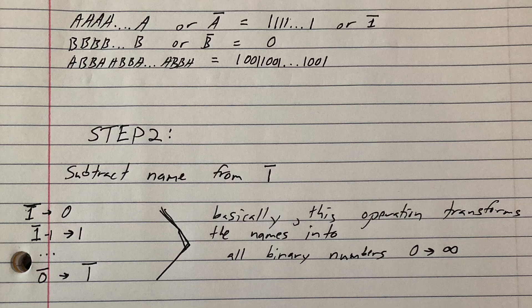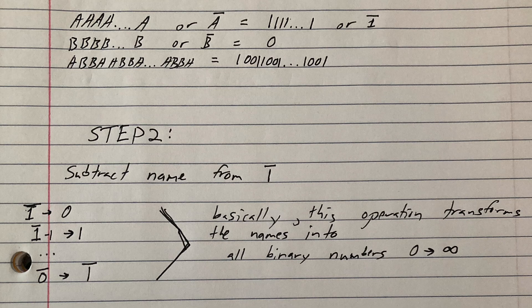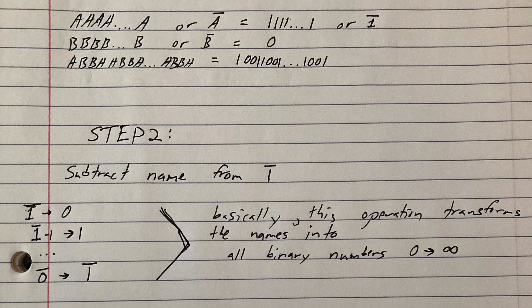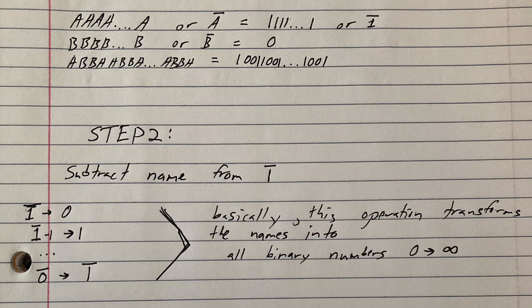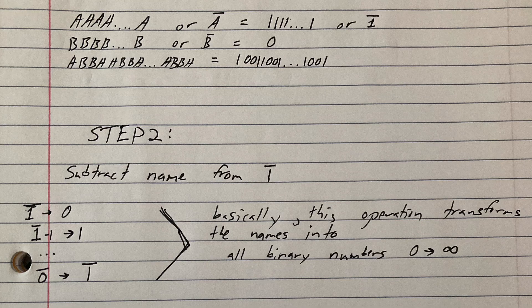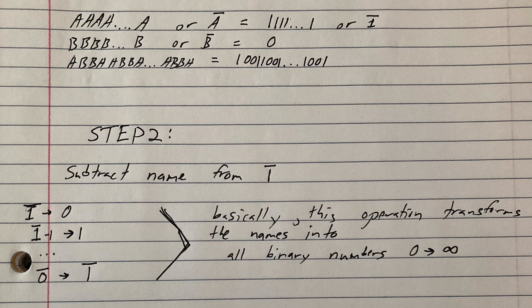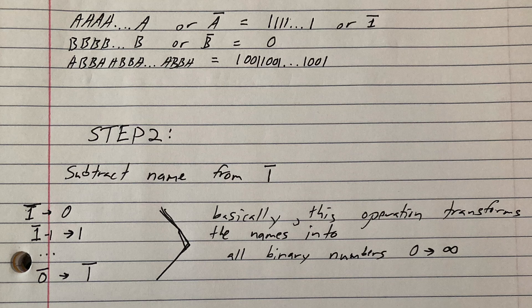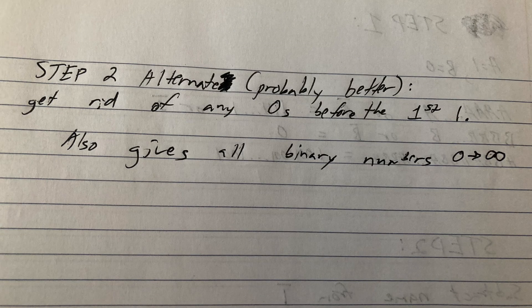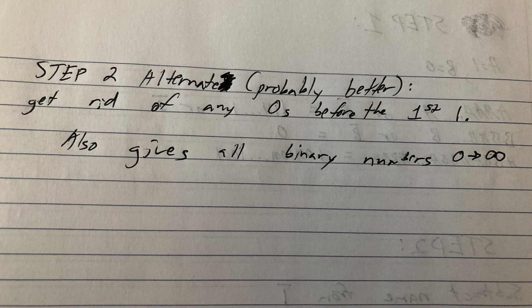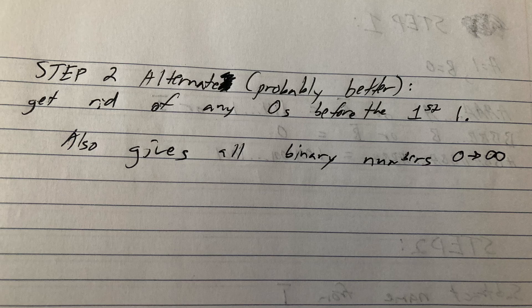In step 2, what we're going to have each of these people do is subtract infinite 1 from their name, which infinite 1 is the highest possible binary number. So what this is going to do is actually transform their name into binary numbers that go from 0 to infinity. Now, the reason that is is because the biggest number, which there's already a guy that his name is all A's, he's going to become 0. And the guy with all B's, his name is going to become infinite 1's. Or what could be an alternative version of the step, which probably is even better, is you just get rid of all the 0's before the first one. And this actually gives you the same exact set of all binary numbers running from 0 to infinity.